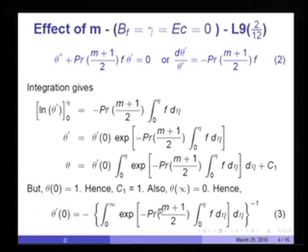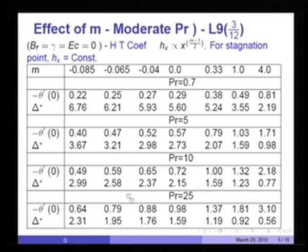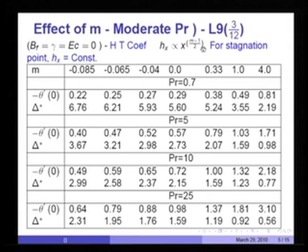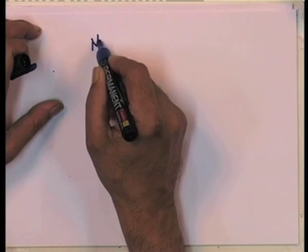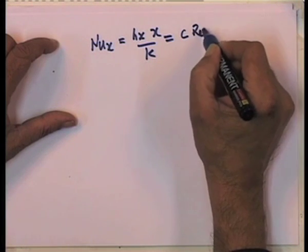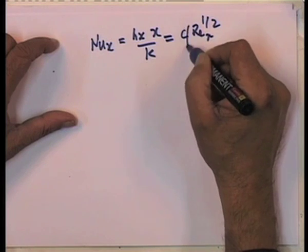Since the velocity solution f d eta is known, we can evaluate this integral. Solutions are evaluated for moderate Prandtl numbers 0.75, 10, and 25, allowing for negative m. Note that we cannot go below m equal to minus 0.091, where separation occurs. So we begin with m equal to minus 0.085, minus 0.065, minus 0.04, 0.331, and 4. These are the accelerating flows. Also, h_x is proportional to x raised to (m-1)/2, so for m greater than 1, h_x can increase with x, and for m equal to 1, h_x is constant — as in stagnation point flow.